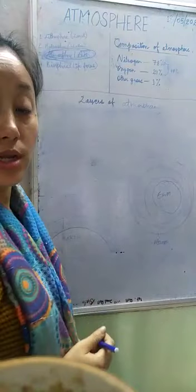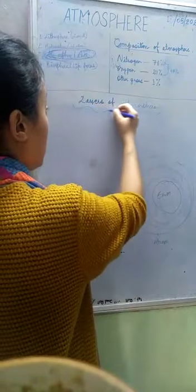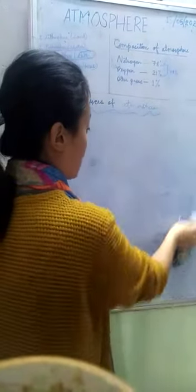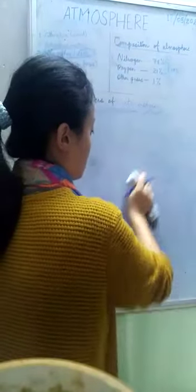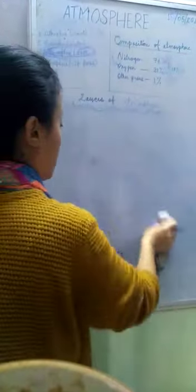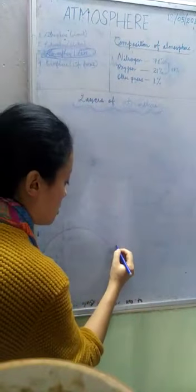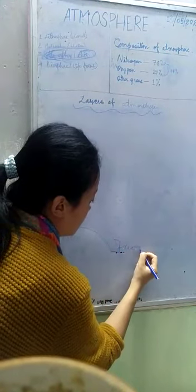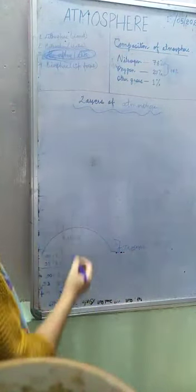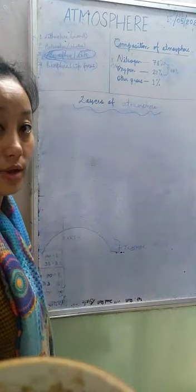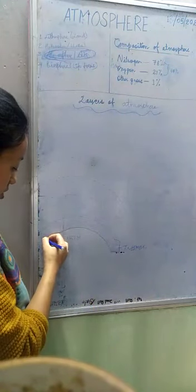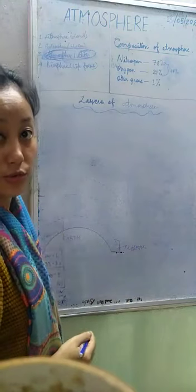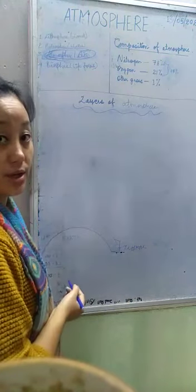Now let us move forward to the layers of the atmosphere. It has different layers and it has its own names. Let us first go to the first layer. This layer is known as troposphere, T-R-O-P-O-S-P-H-E-R-E. This is the first layer of the earth's surface. It extends from 16 kilometers and all the weather phenomenon takes place here in this layer.